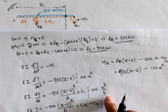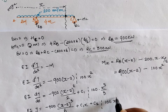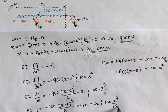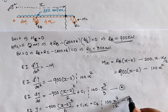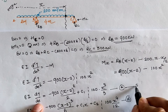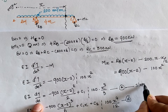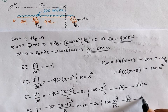The second integration gives the deflection equation with term 100x⁴/12, where equation A represents the slope equation and equation B represents the deflection equation.